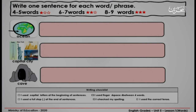Finally, you have to look at the pictures and write one sentence for each picture. Under each picture, you have a word or a phrase. In your sentence, if you write four to five words, you earn one star. If you write six to seven words, you earn two stars. And if you write eight to nine words, you earn three stars. Before you start writing, let me remind you: start your sentences with a capital letter, end with a full stop, leave space between words, check your spelling, and write using the correct grammar tense. You have five minutes. Start.